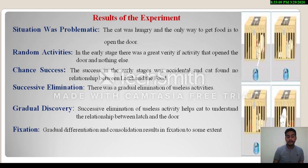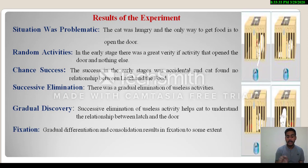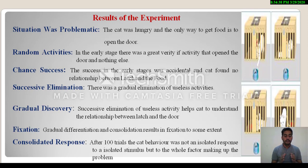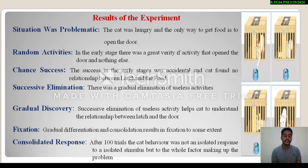Sixth point is fixation. At the end of the experiment, gradual differentiation and consolidation results in fixation. As the cat began to specify its responses and eradicate meaningless activities, it started to understand exactly how to open the door by pressing the lever. After 100 trials, the cat's behavior was not an isolated response to an isolated stimulus, but a response to the whole situation as a whole.